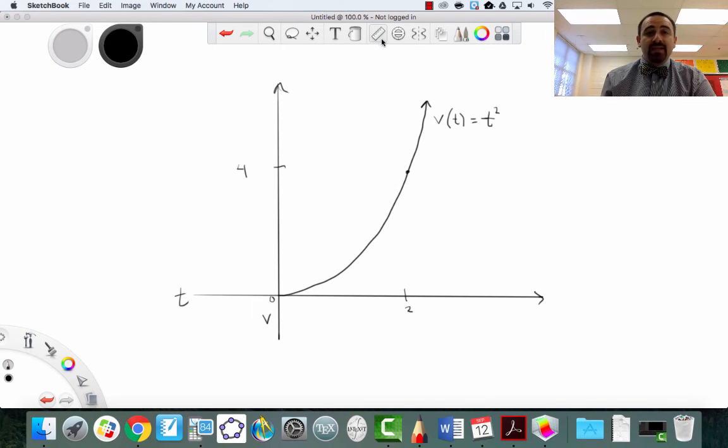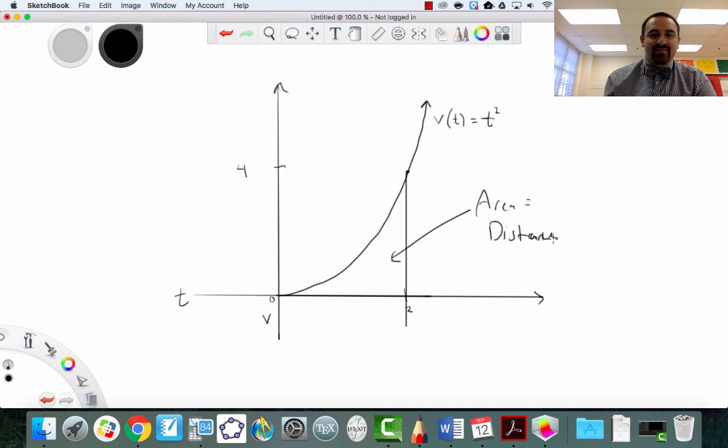Well, it's the same meaning as we had before, right? It's simply, there we go. The area enclosed by the curve is going to be the total distance traveled. Whatever the distance traveled is, it's going to be represented by this area.